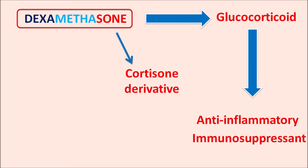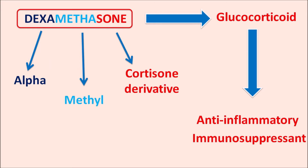The prefix 'dexa' indicates it has an alpha configuration, and the infix 'meta' indicates it has a methyl group. So dexamethasone has a methyl group at the 16th position with alpha configuration. This drug is a cortisone derivative with a 16-alpha methyl group and further structural modifications that increase glucocorticoid activity along with a little increase in mineralocorticoid activity.